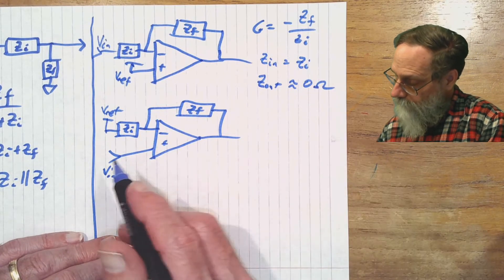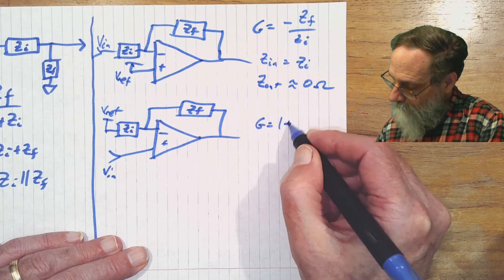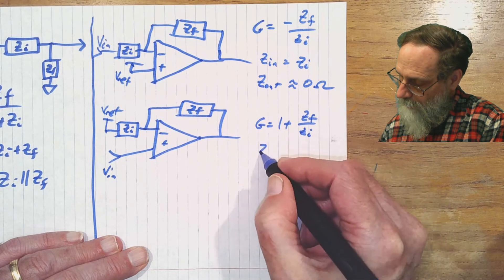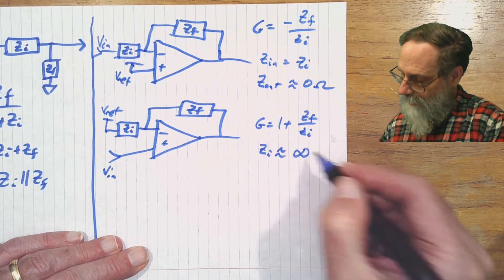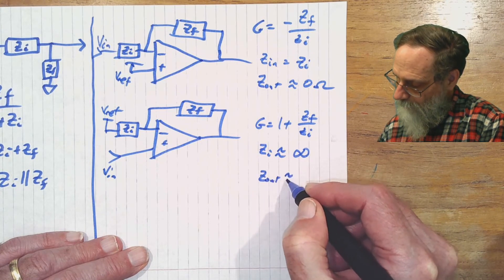For this one, the gain is 1 plus ZF over ZI. Zin is approximately infinity. And Zout is, again, approximately zero ohms.